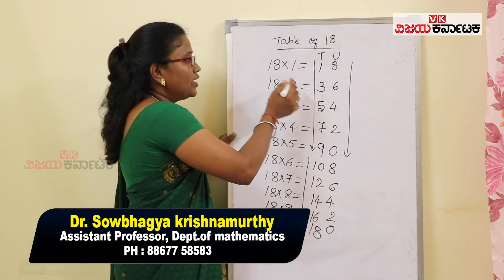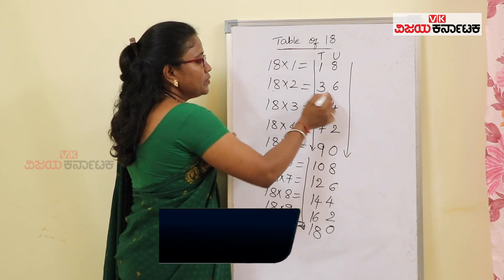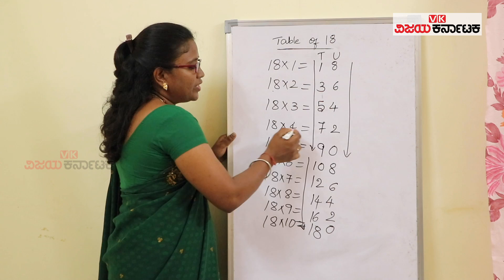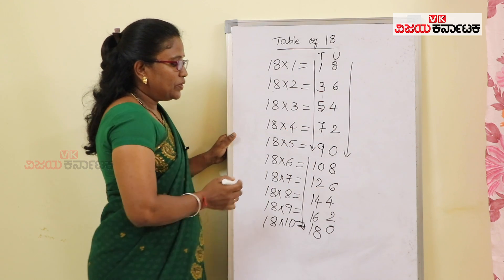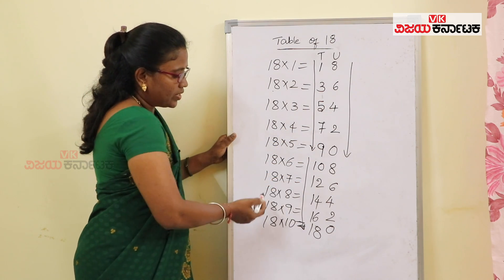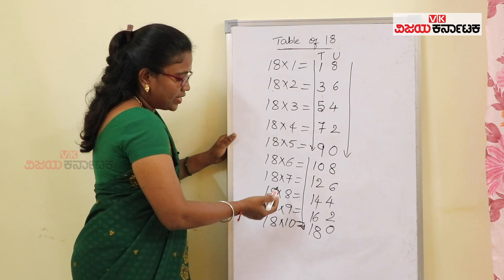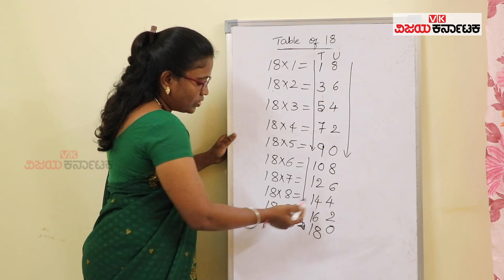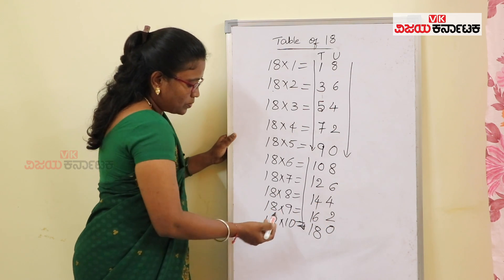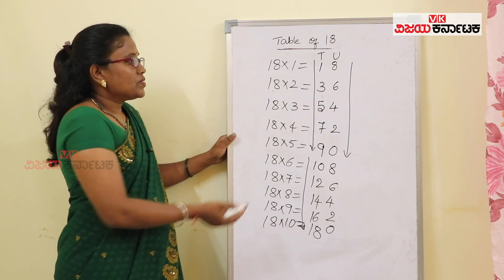You got the 18th table. 18 1s are 18, 18 2s are 36, 18 3s are 54, 18 4s are 72, 18 5s are 90, 18 6s are 108, 18 7s are 126, 18 8s are 144, 18 9s are 162, 18 10s are 180.